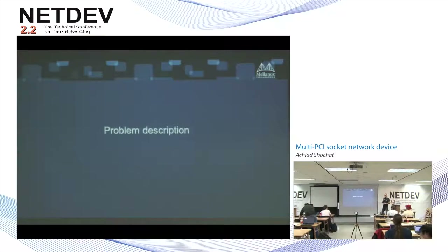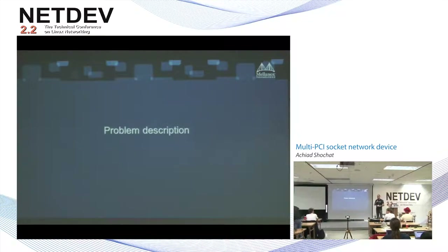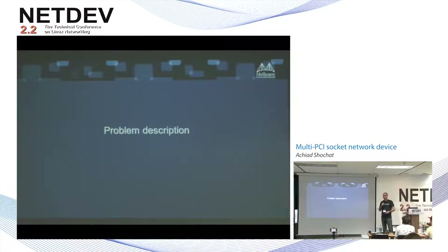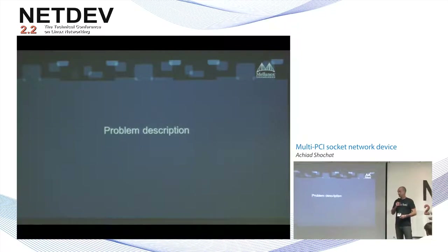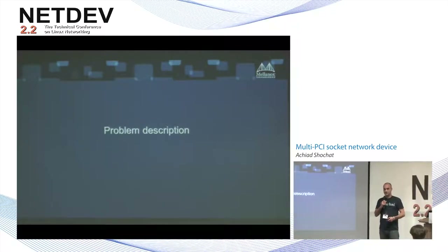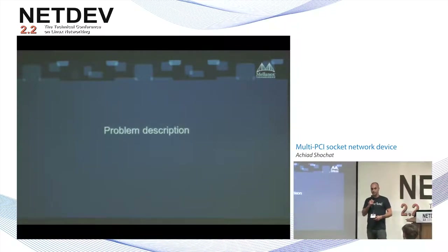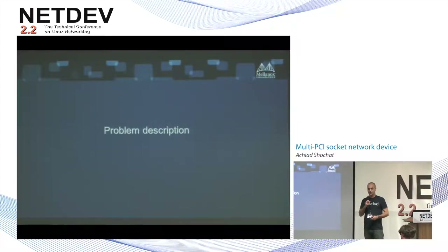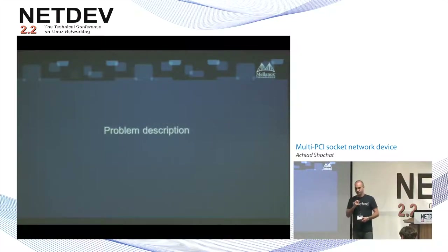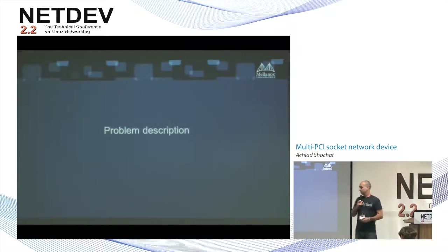I'll start with the problem description and motivation for having such NICs, then I'll continue with suggesting a software model to represent such NICs in the kernel, and finally show some very early proof-of-concept performance numbers.